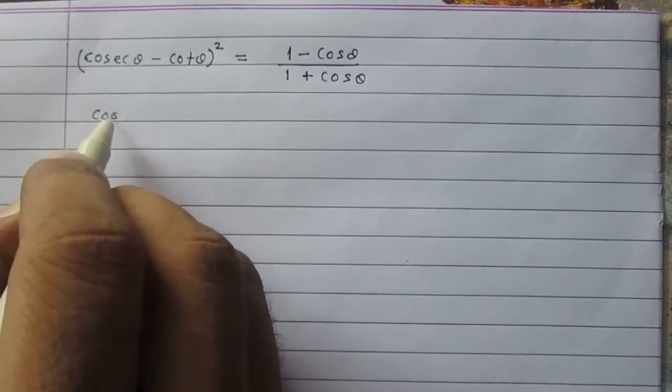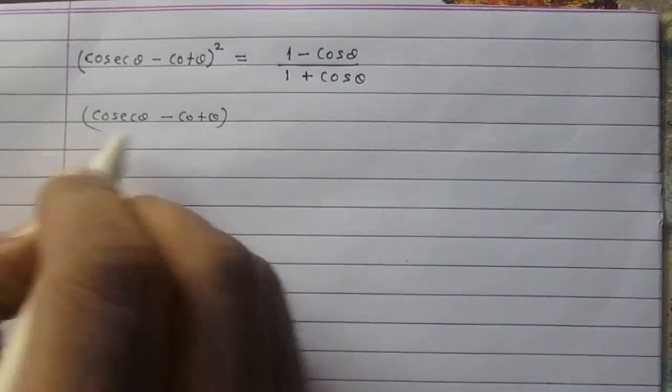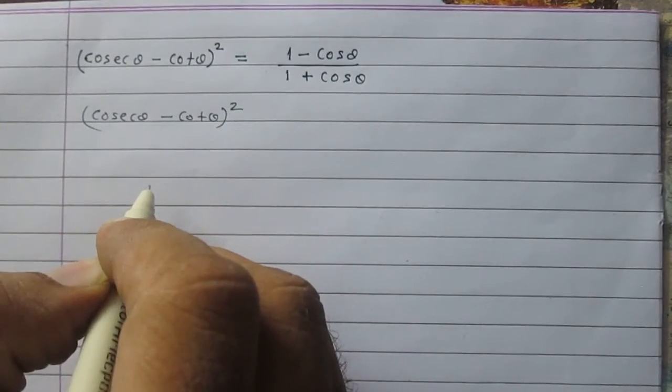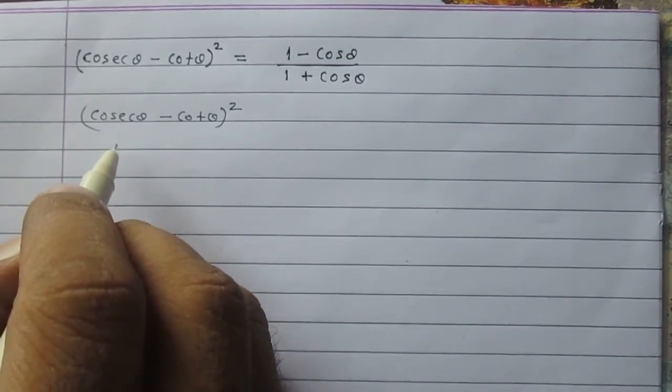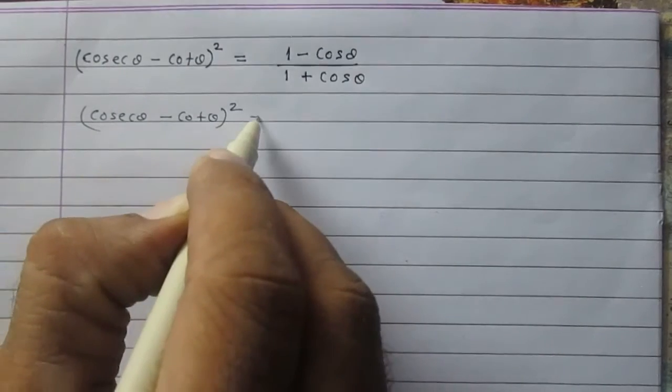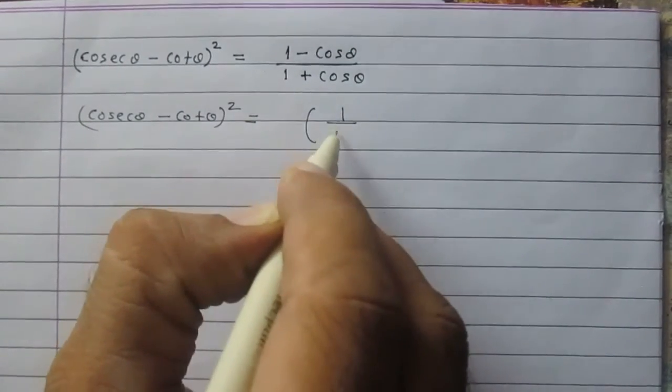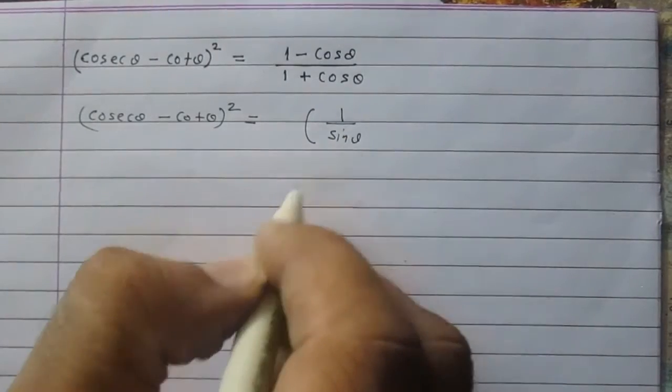It is cosec theta minus cot theta whole square. We know that cosec theta is equal to 1 upon sin theta. Cosec theta is the reciprocal of sin theta, so it can be written as 1 upon sin theta.